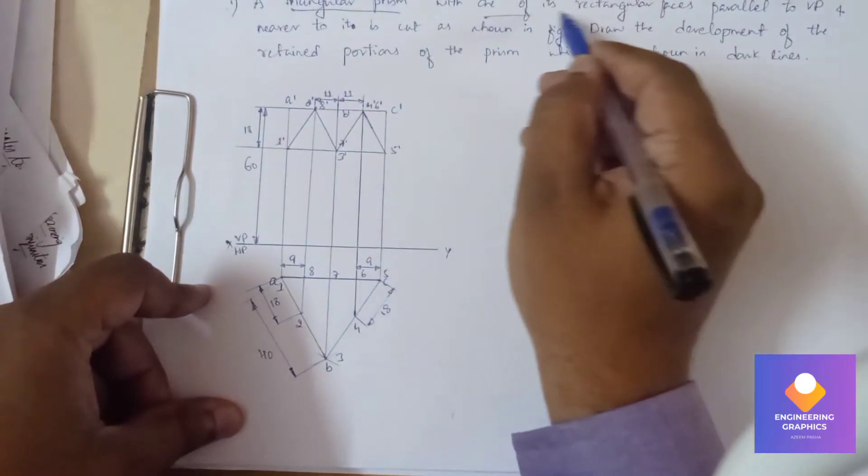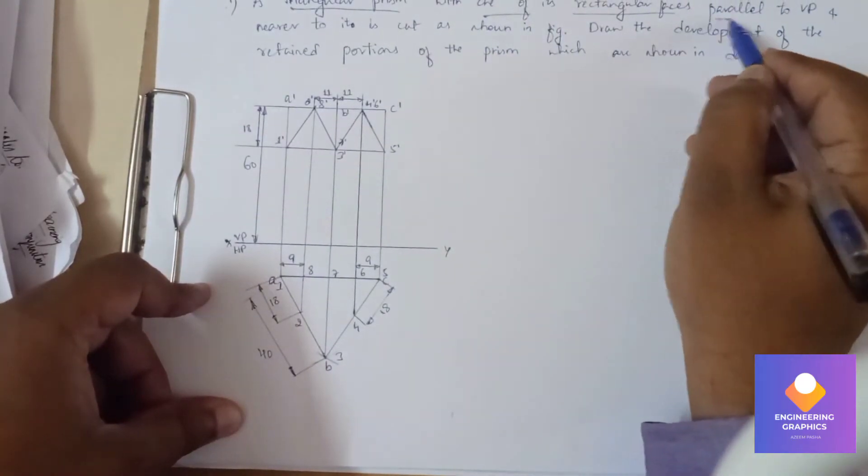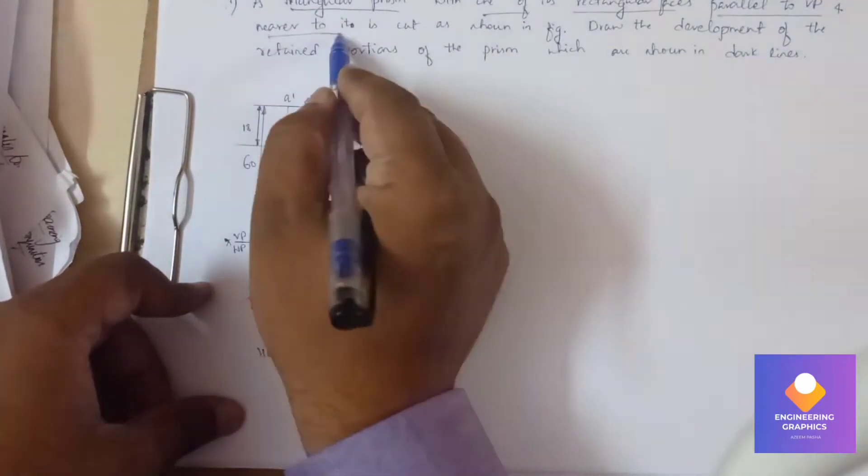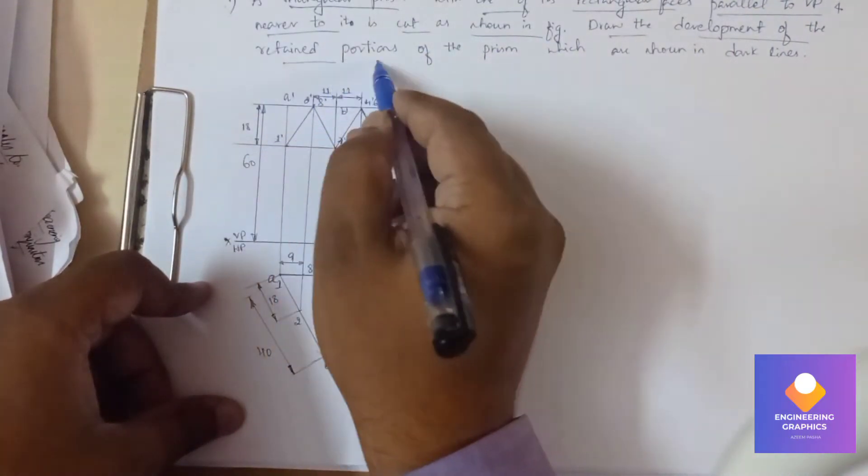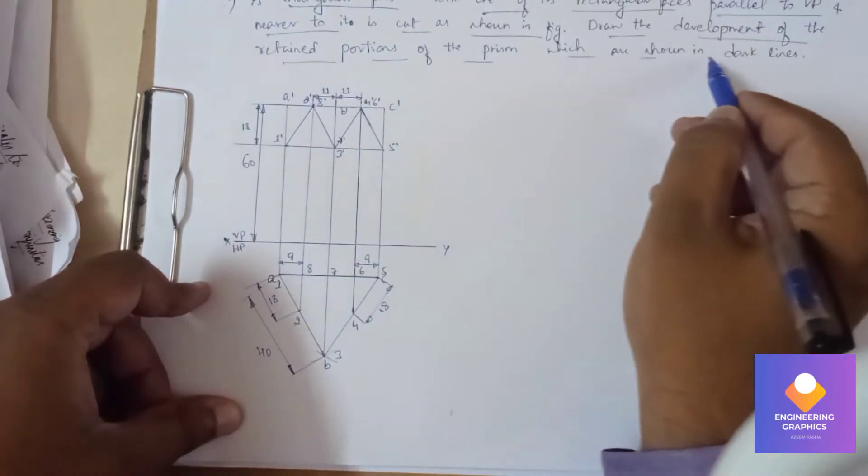You can see in this regular triangular prism of dimension, resting with respect to face parallel to VP near to the cut as shown in figure. Rather, development of the retained portion of the prism which are shown in figure.